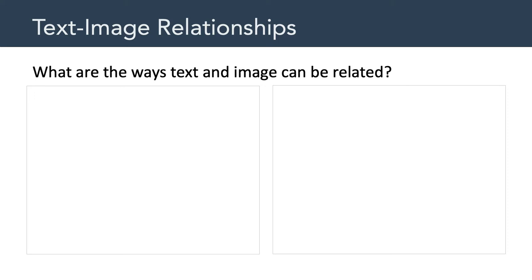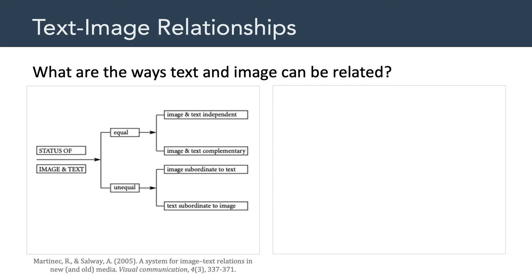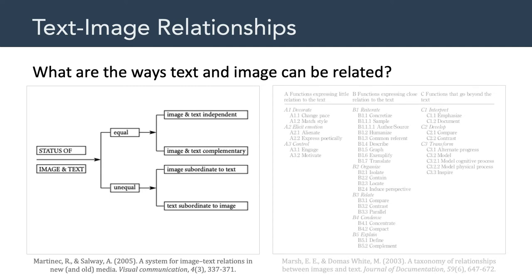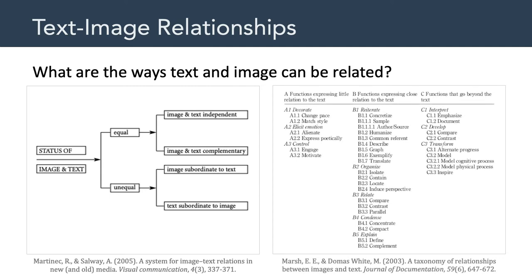While we're talking about the multimedia principle, I wanted to discuss the importance of text-image relationships — in other words, what are the different ways text and image can be related? Believe it or not, there's an entire area of research addressing this very question. Here's a tree diagram outlining the equality of text and image. Personally, before I got into designing multimedia, these were things I had never thought about. Here's another attempt to create a taxonomy of text-image relationships. In fact, these researchers identified over 40 different possibilities, outlined here in this table.